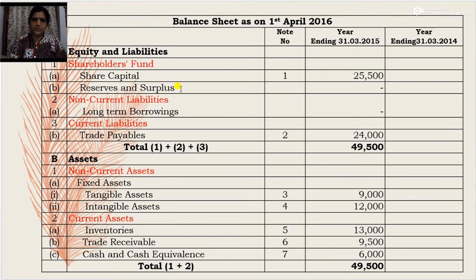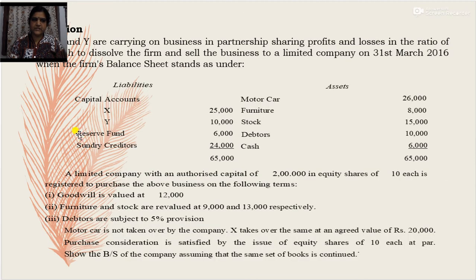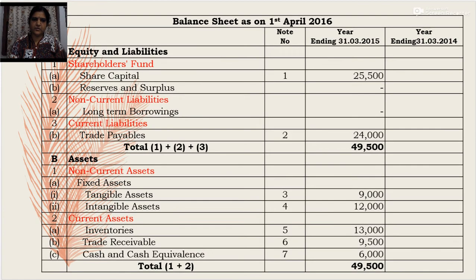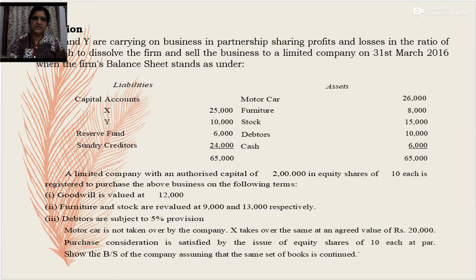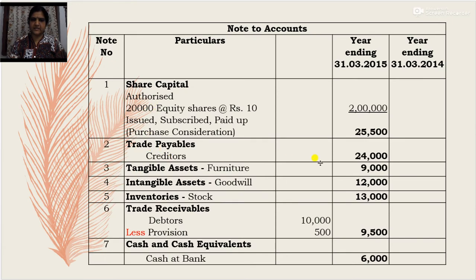Regarding reserves and surplus, there is none — the reserve fund belongs to the vendor and will be distributed among partners X and Y, so it does not appear in the purchasing company's balance sheet. There are no long-term borrowings. Under current liabilities, there is one item: trade payables, because the purchasing company took over sundry creditors of Rs. 24,000. This Rs. 24,000 appears as note 2 — trade payables, creditors Rs. 24,000.